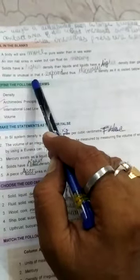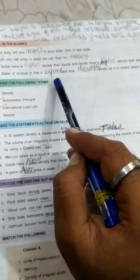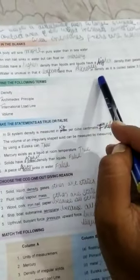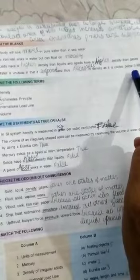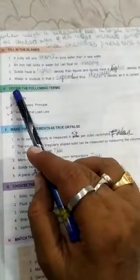Water is unusual in that it expands and thus decreases its density as it is cooled below 3.98 degree Celsius.